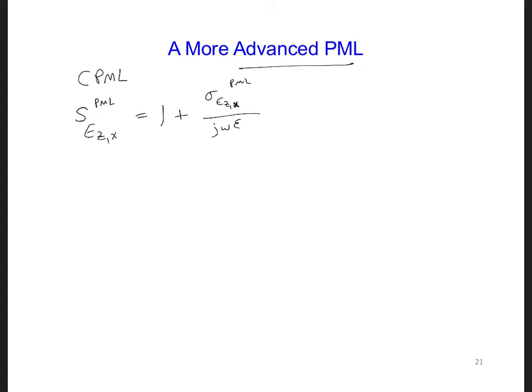A more advanced and better performing PML for complex scenarios uses instead S PML for EZX, so it would equal kappa plus sigma all over alpha X plus J omega epsilon.